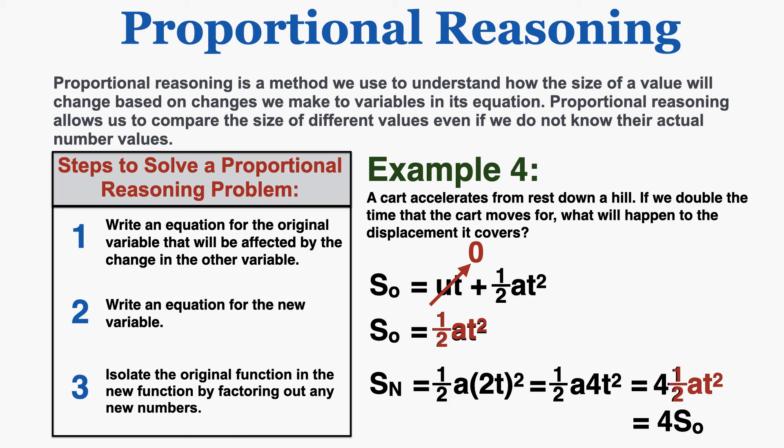So as long as you're able to follow those steps, you'll be able to use proportional reasoning to understand the relationship between any two variables, even if you can't clearly visualize what's going on in the problem, and even if you don't have the exact number values of the variables themselves.